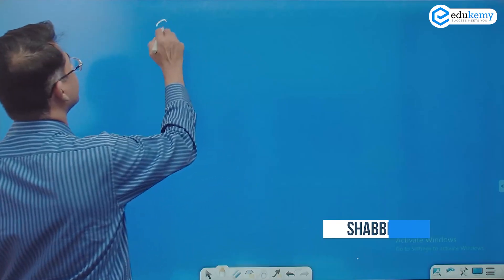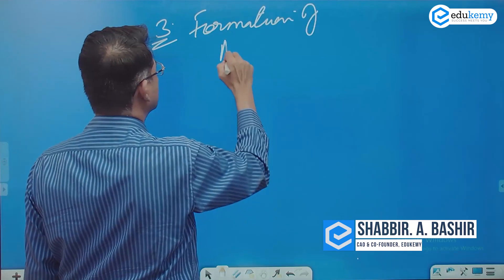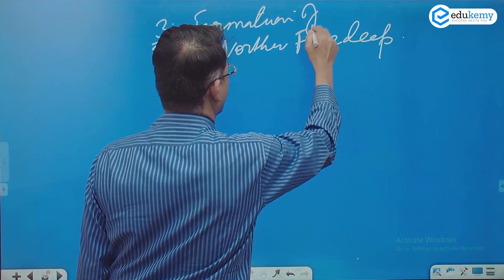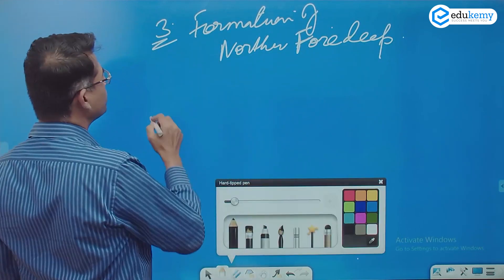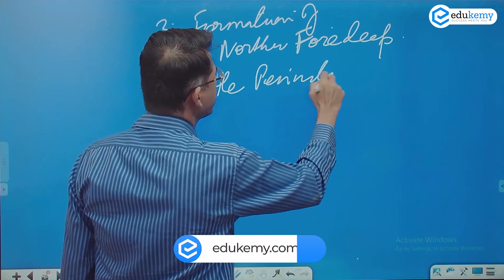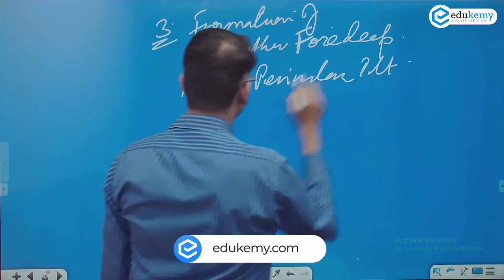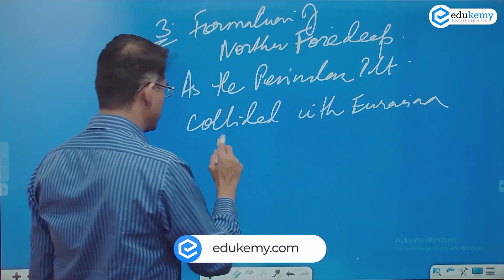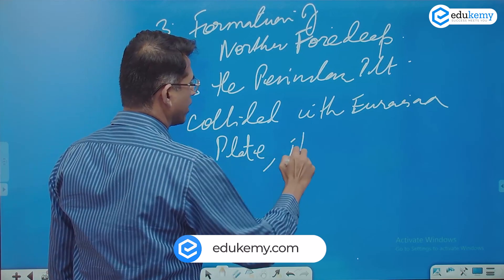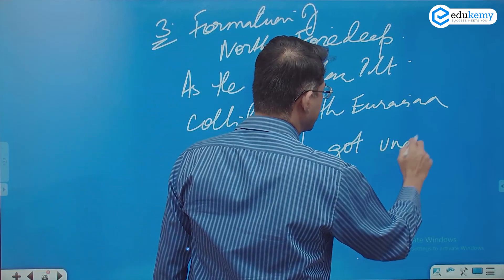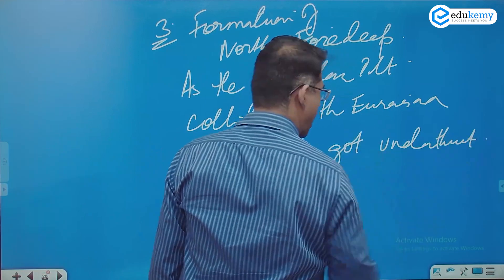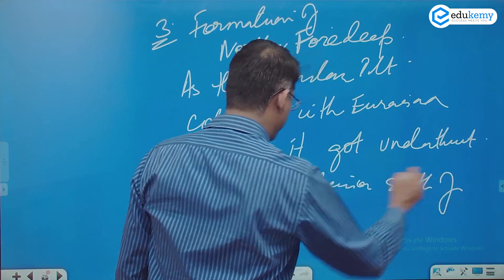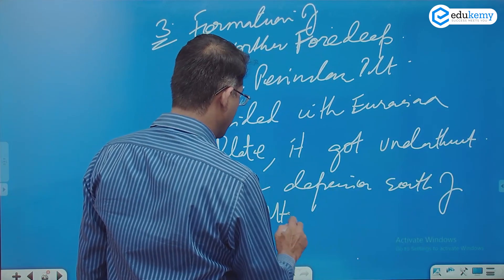The third event is the formation of the Tethyan Foredeep. The peninsular plateau collided with the Eurasian plate, and it got under-thrust, forming a depression to the south of the Himalayan mountains.